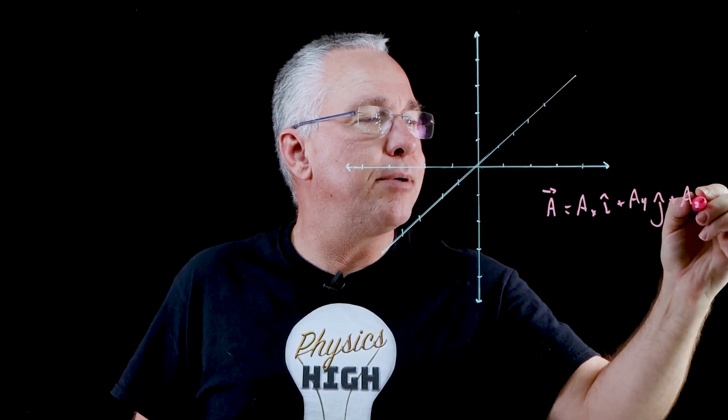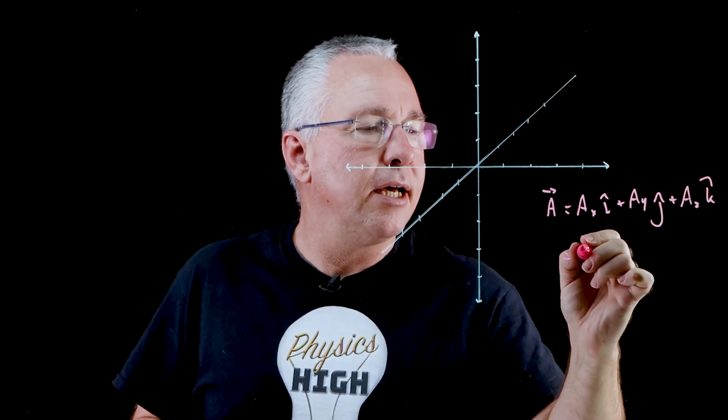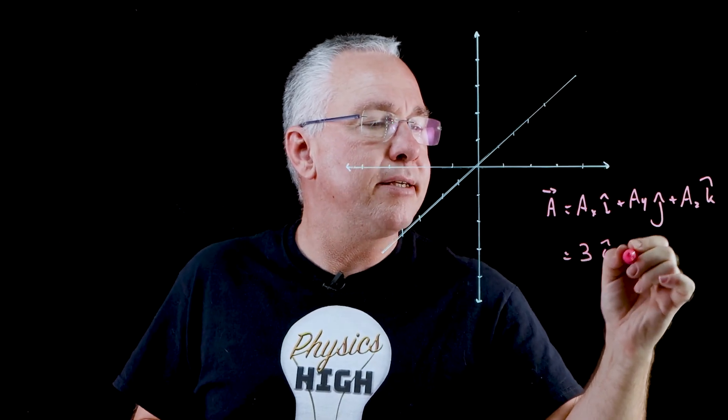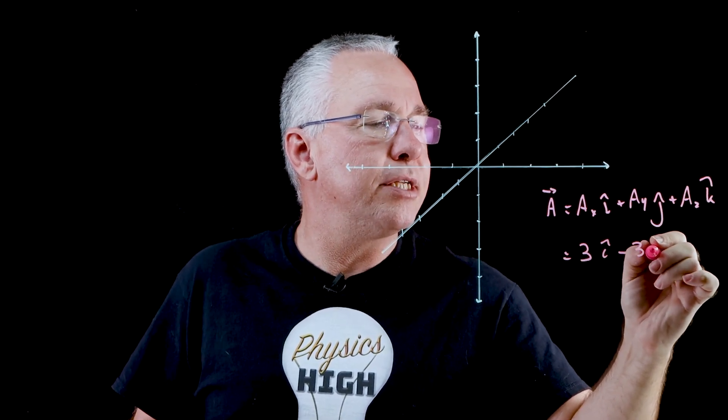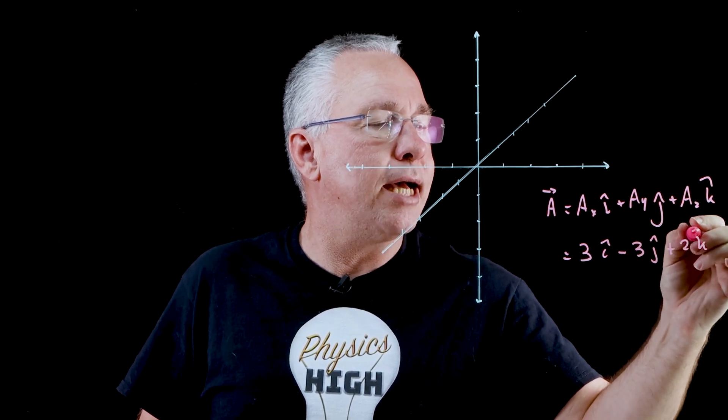Plus the z component k hat. And so in this case I might have a vector that is three unit vectors i hat minus three units in terms of j hat plus two units k hat.